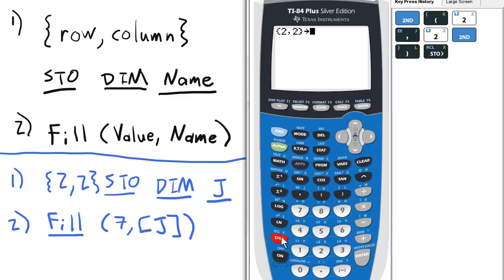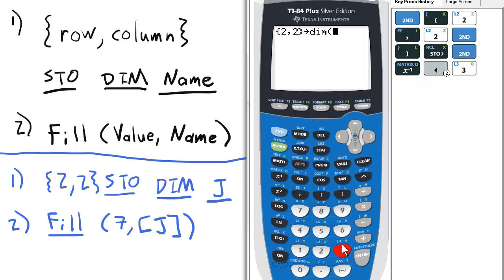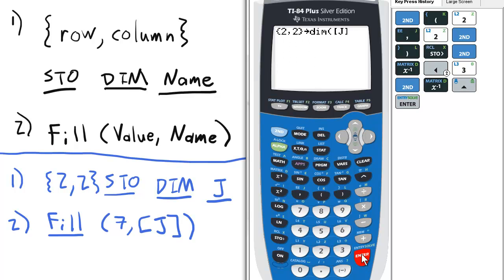And then I want to store it, and I have to store it as dimensions, so I have to go to the matrix menu. From there I'm going to go to the math, the long way, sorry about that, and choose three for dimensions. And I need to save it as a name, so I'm going to make this matrix J, and now we have matrix J with the dimensions which are two by two.